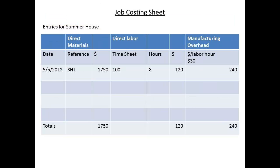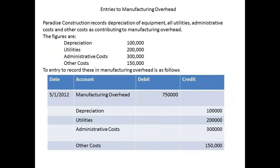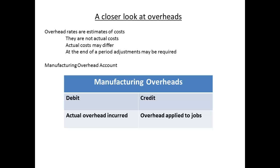At this point, the job costing sheet will now have entries relating to direct materials, direct labour, and manufacturing overhead. Materials costs are $1,750, labour costs are $120, and manufacturing overhead of $240 has been applied. We have seen that applying manufacturing overhead will produce a credit to the manufacturing overhead account. The entries that debit the account come from all the activities that make up manufacturing overhead, such as depreciation, utility costs, administrative costs, and any other costs. Remember that since the rate of applying overhead is determined before the job commences, it is based upon estimates of costs. Actual costs may be different during a period, and then an adjustment might be necessary.